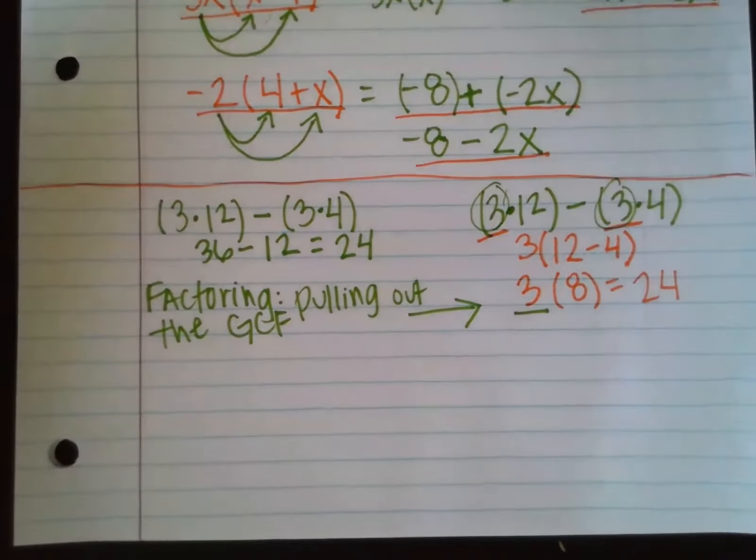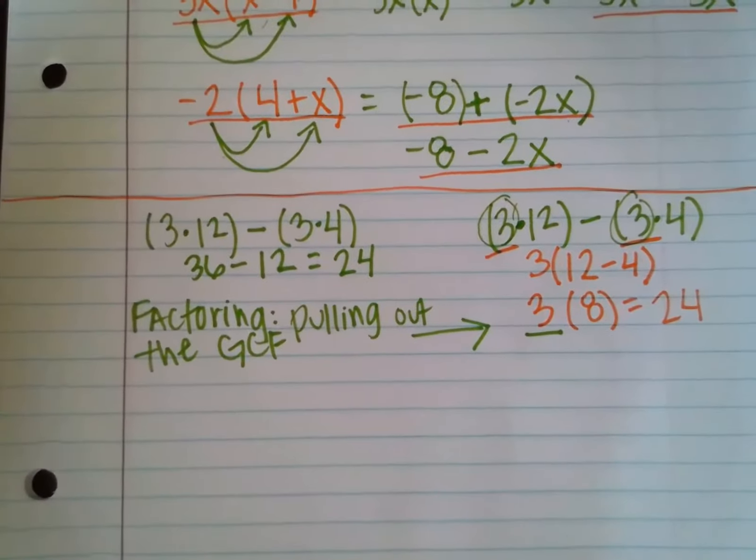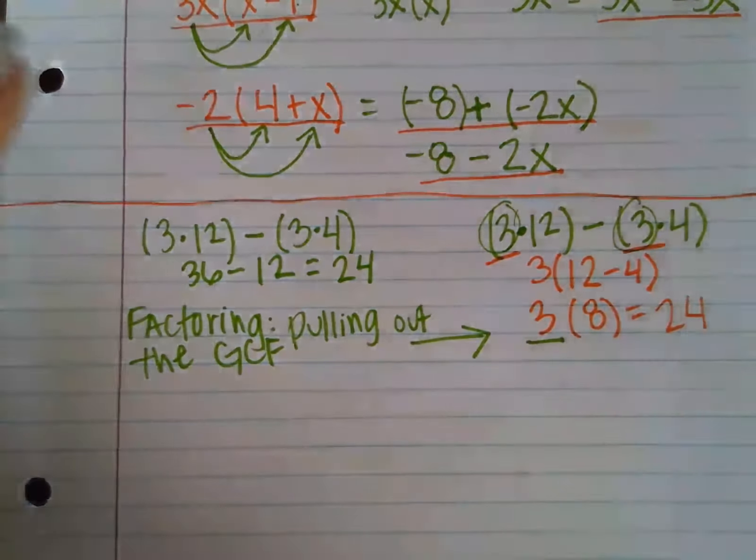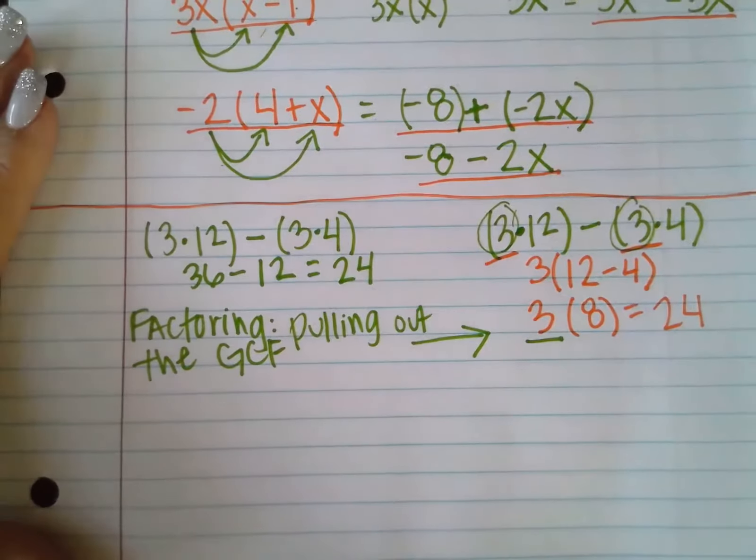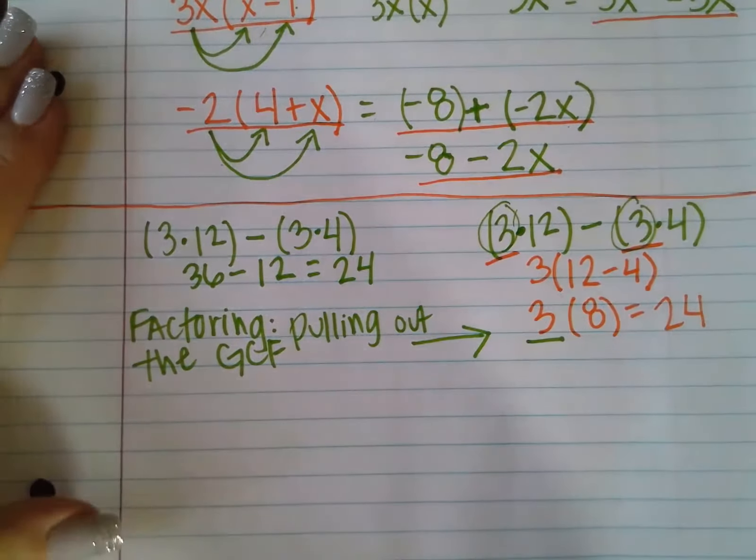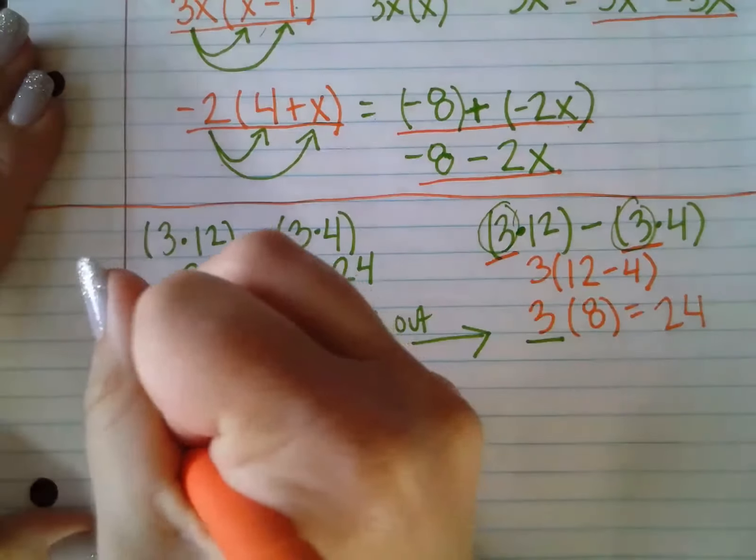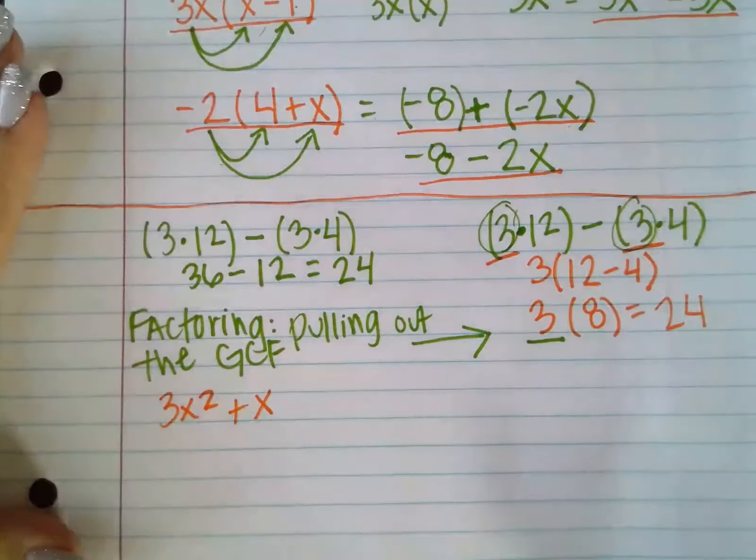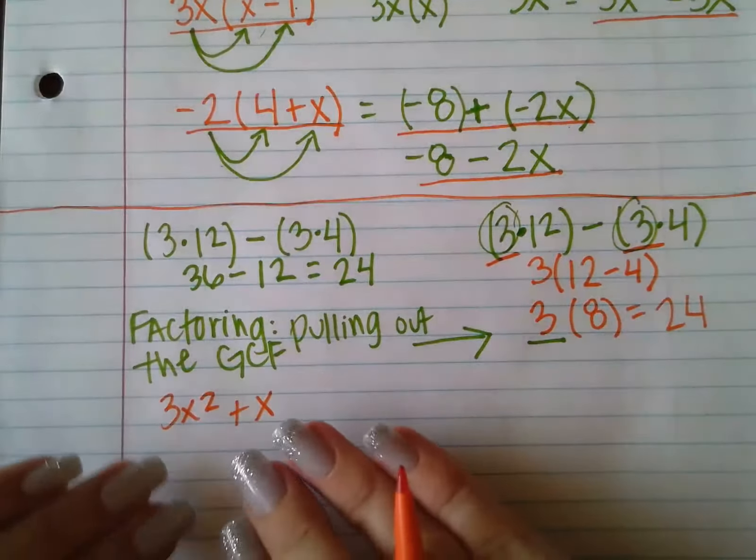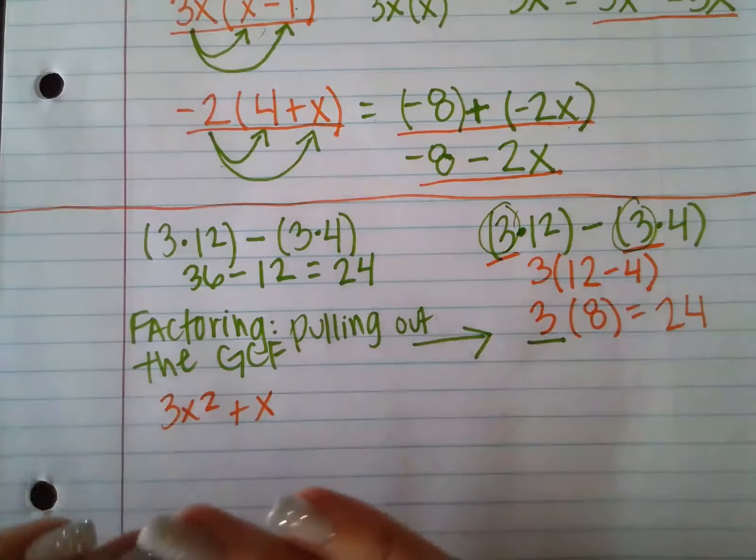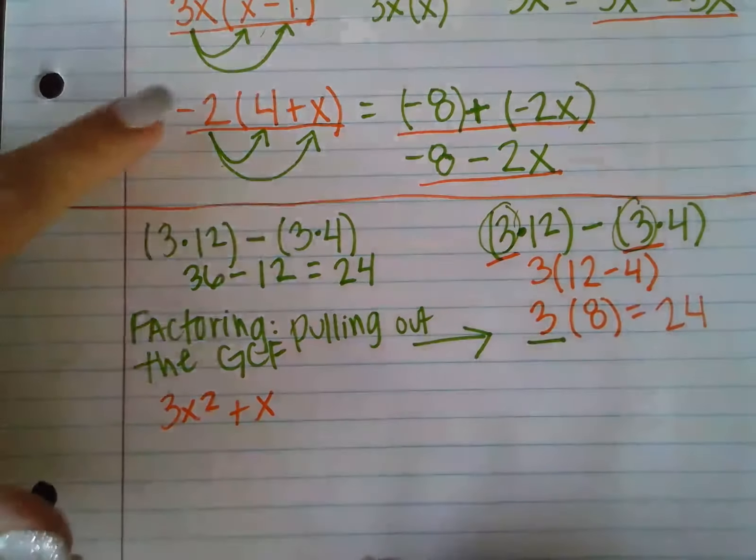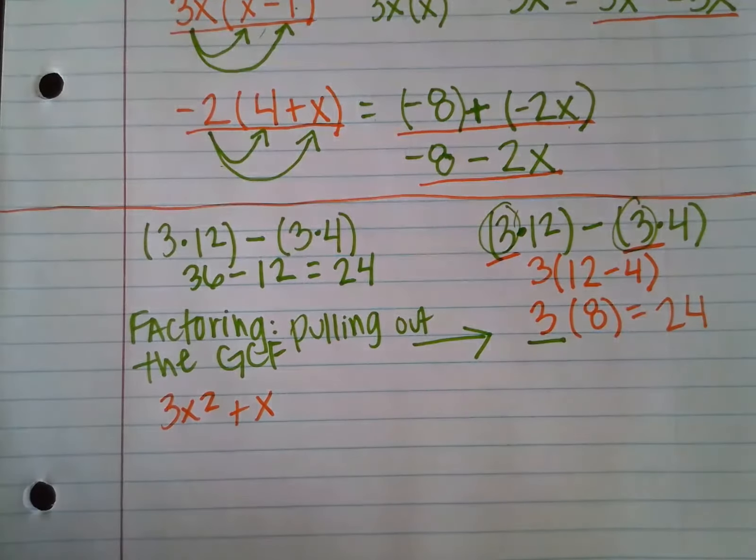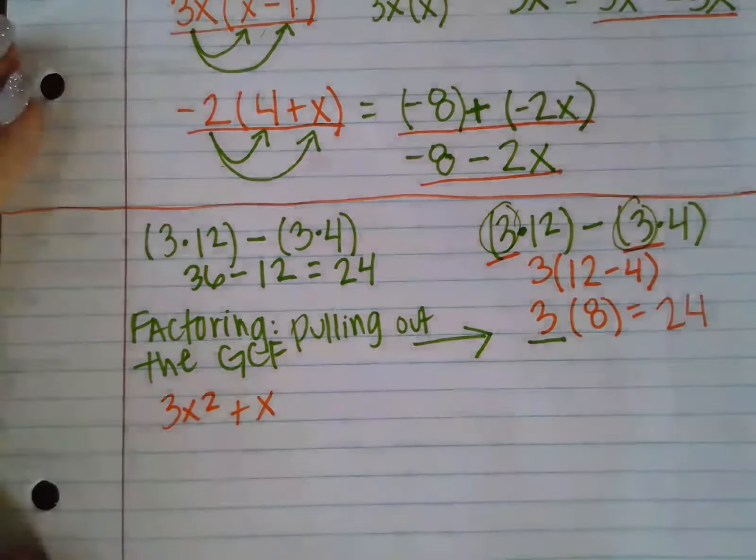In this final video, we are going to look at some examples of factoring an expression. So let's say I have the expression 3x squared plus x. This is in its simplified form, in its distributed form. But if I wanted to rewrite it in this factored form, what I would have to do is look for the greatest common factor between the two terms.